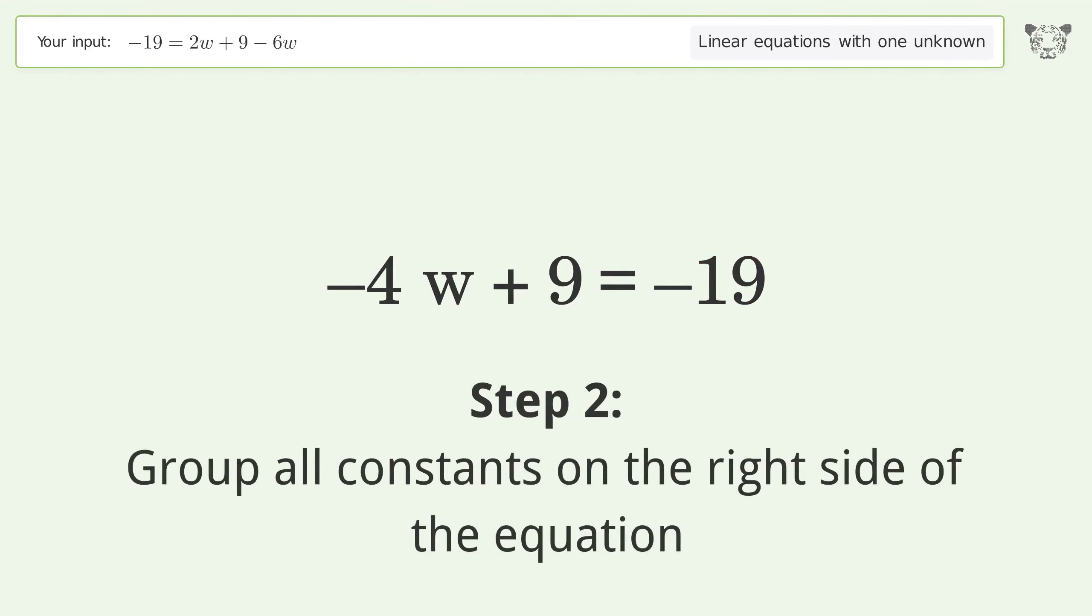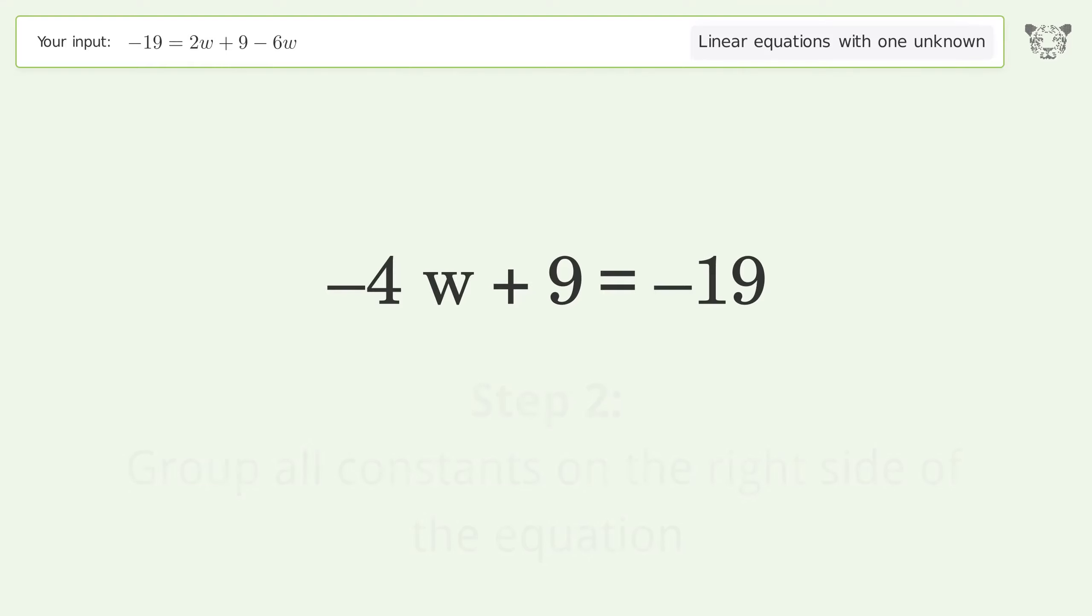Group all constants on the right side of the equation. Subtract nine from both sides. Simplify the arithmetic.